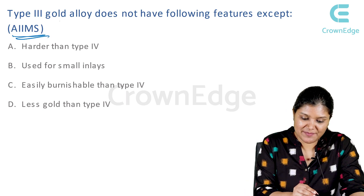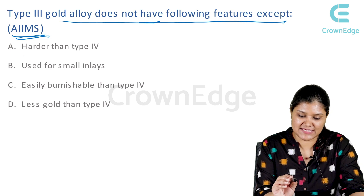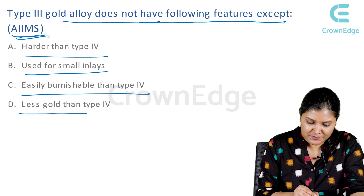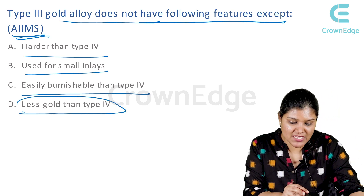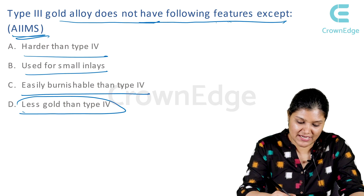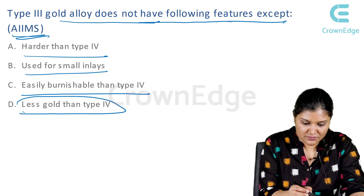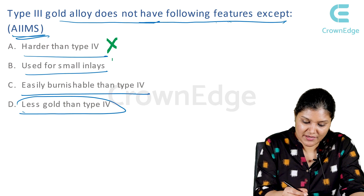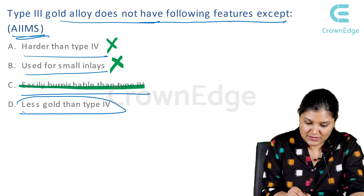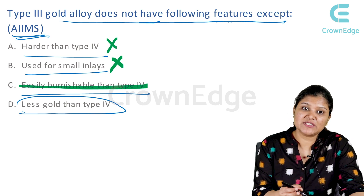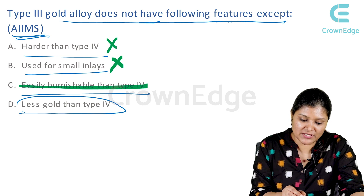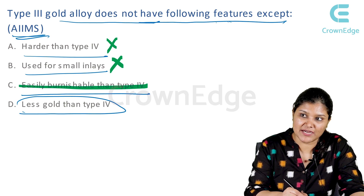This question was asked in AIIMS: Type 3 gold alloys does not have following features except — options are harder than type 4, used for small inlays, easily burnishable than type 4, and less gold than type 4. Type 4 is the hardest, so type 3 is not harder than type 4. Type 3 is not used for small inlays. Type 3 is more easily burnishable than type 4 — this is correct. Type 3 does not have less gold than type 4; it has more gold, which is why type 4 is the hardest.